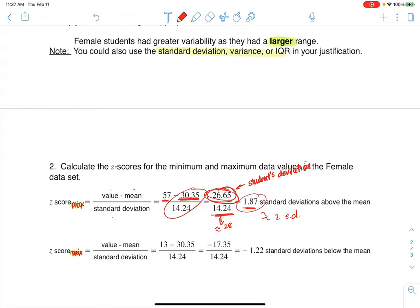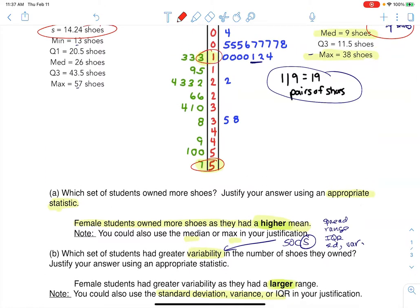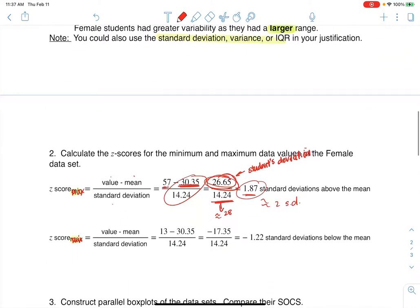On the min side, you can see, if we go back to our stem and leaf plot, that min was 13. And that's below average. And this student, this female, she had 17 fewer shoes than average. And so she deviated, you can see in ratio to the standard deviation, her particular deviation of 17 in ratio to 14 is a little bit more than one. And it's negative because this student was below the mean.